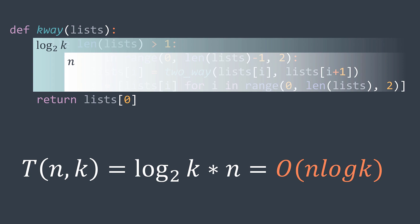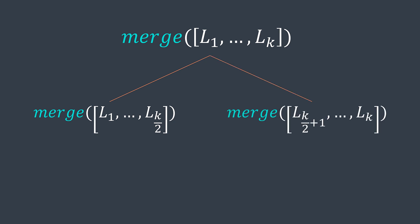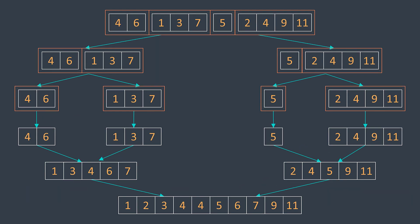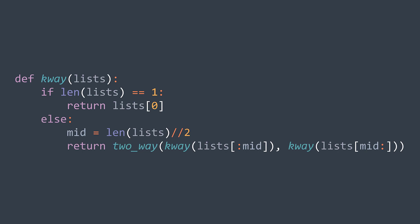Another solution: we want to merge k lists. What if we merge the first k/2 lists into one sorted list, merge the last k/2 lists into one sorted list, and apply two-way merge to merge them? And to merge k/2 lists, we merge the first k/4 together, the last k/4 together, and apply two-way merge — basically a recursive process. Here is a small example. In code, if we have only one list we return it; otherwise, we calculate the mid index, recursively merge the part ending at mid, recursively merge the part starting from mid, and apply two-way merge on the results.